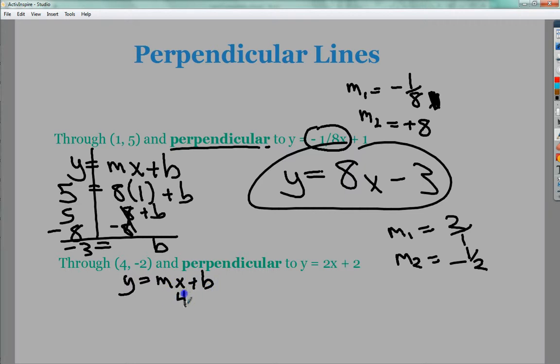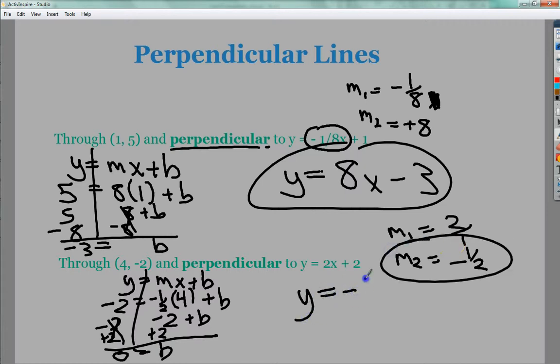Plug in my x value. Plug in my y. Plug in my new m value. And I'm looking for b. -1/2 times 4 is -2. Add 2 to both sides. And don't freak out. These don't cancel. It just goes to zero. So my final answer is y = -1/2 x. And you could put plus zero if you want to, or you could just leave it as y = -1/2 x. That's totally appropriate to deal with as well.